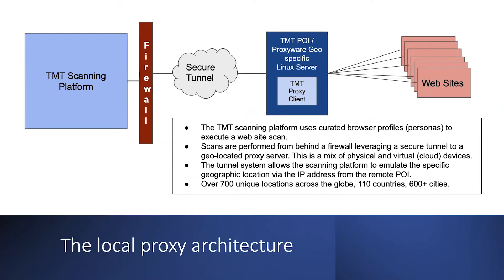From the actual proxy system standpoint, the solution requires a Linux server running in your environment within your network. The system creates a secure SSH reverse tunnel back to the MediaTrust scanning platform. Once that reverse tunnel is set up, they can start scanning or browsing sites using this proxy on behalf of your environment and users. This is a great way to get around firewall restrictions, and they're also scanning over 700 unique locations around the globe, casting a wide net for malicious content that may be hosted on the web and targeting your environment.